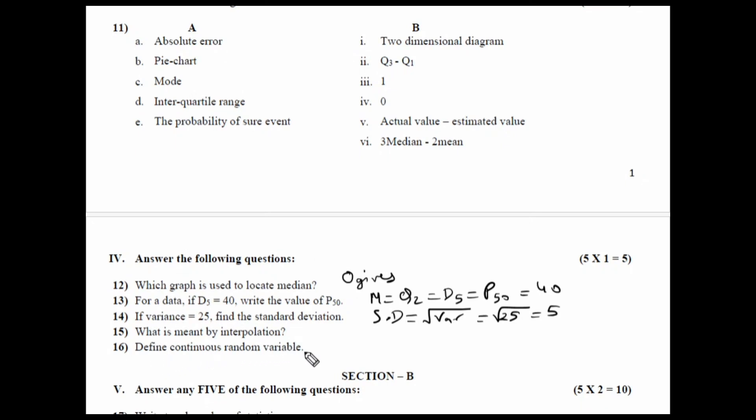And last one is define continuous random variable. Random variable is the function that assigns number, a real number to every outcome in the sample space. Now, there are two random variables discrete and continuous. Discrete is the one where the variable assumes whole value 0, 1, 2, 3, 4 and so on. Continuous random variable means in a given range, this variable will assume all possible values. Such a variable is called as a continuous random variable. So, this is your complete description of section A. In the next video, we shall solve the section B. Thank you.